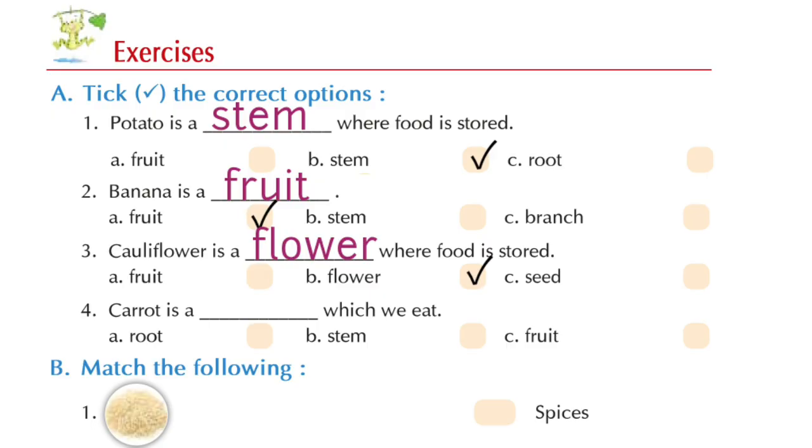Number 4, carrot is a blank which we eat. Option A, root. Option B, stem. Option C, fruit. Now, which is the correct option? Yes, option A, root. Carrot is a root which we eat.